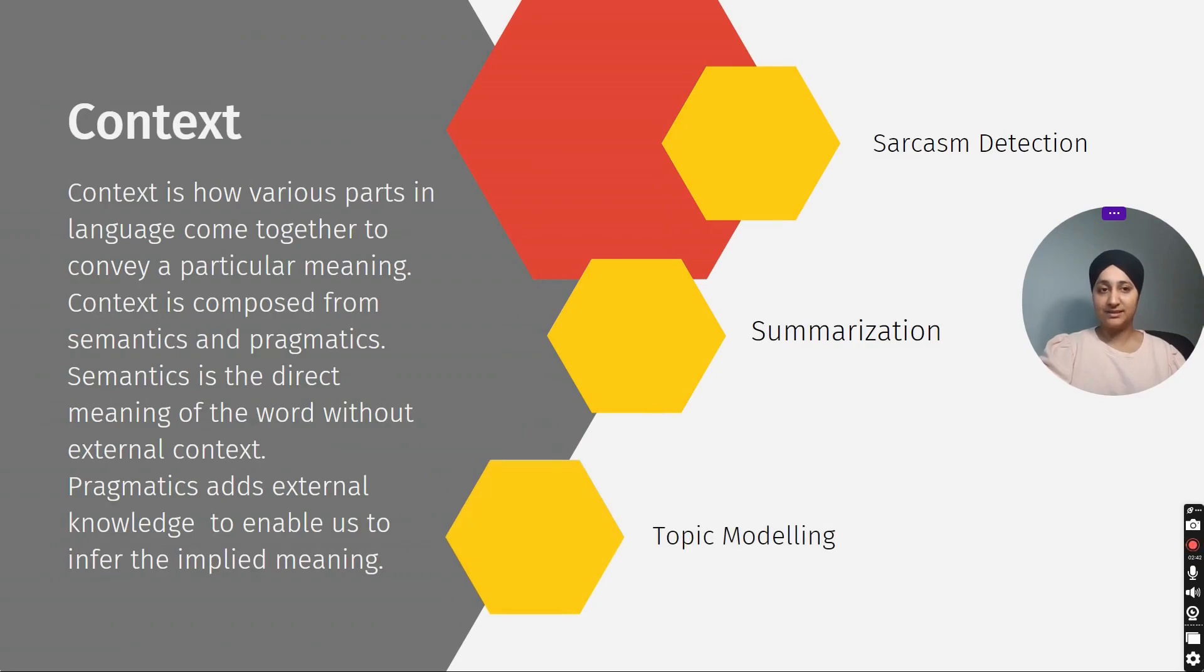Now context. Context is how various parts of language come together to convey a particular meaning. Context is composed of semantics and pragmatics. Semantics is the direct meaning of the word without external context, and pragmatics adds external knowledge to enable us to infer the implied meaning. Context is used in various NLP applications like sarcasm detection, summarization, and topic modeling.